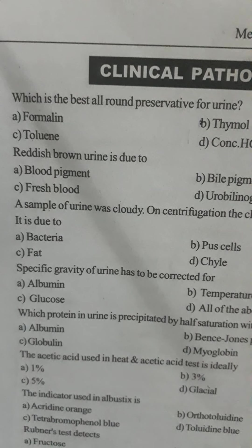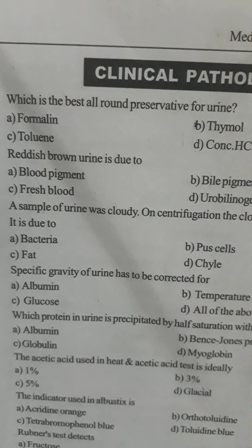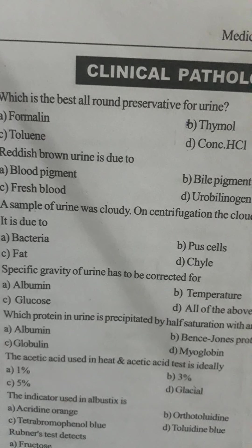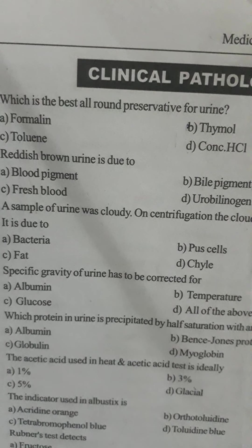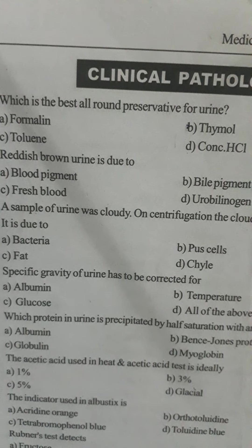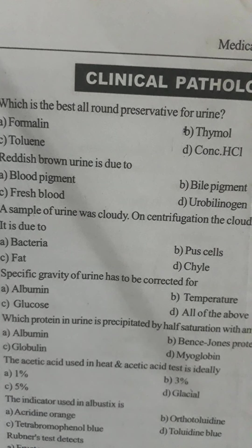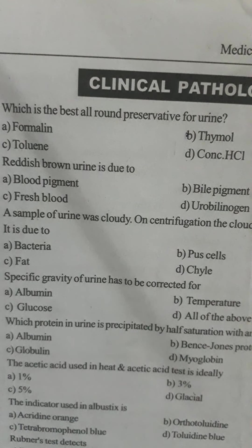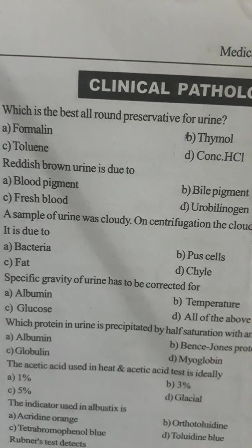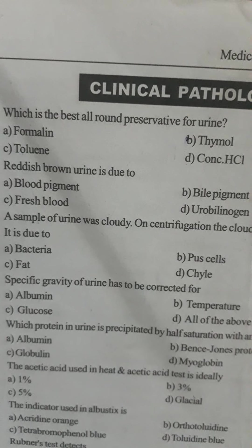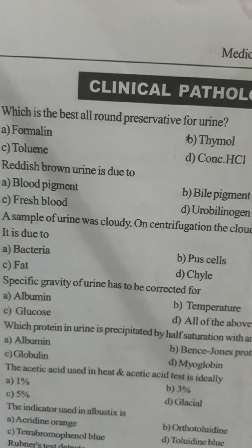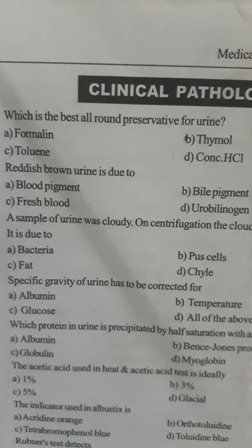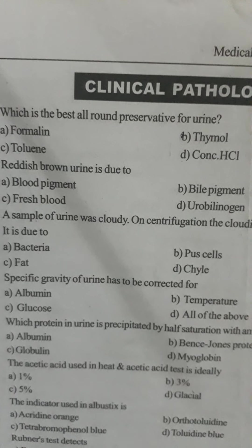Question number two: reddish brown urine is due to — Option A: blood pigment, Option B: bile pigment, Option C: fresh blood, Option D: urobilinogen. The correct answer is Option D, urobilinogen.